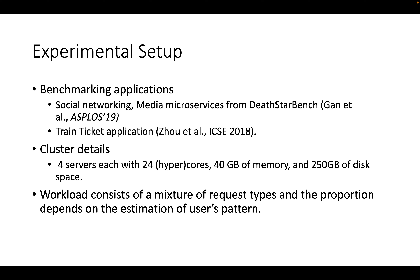Coming to the experiment setup, the benchmarking applications we use are social networking and media microservices from the DeathStar benchmark, and the train ticket application. The social networking application mimics a Facebook-type application, media microservices mimics an IMDB-type application, and the train ticket application is used to book and manage train tickets. The cluster consists of four servers, each with 25 hypercores, 40 GB of memory, and 250 GB of disk space. The workload consists of a mixture of request types, and the proportion depends on the estimation of user patterns.